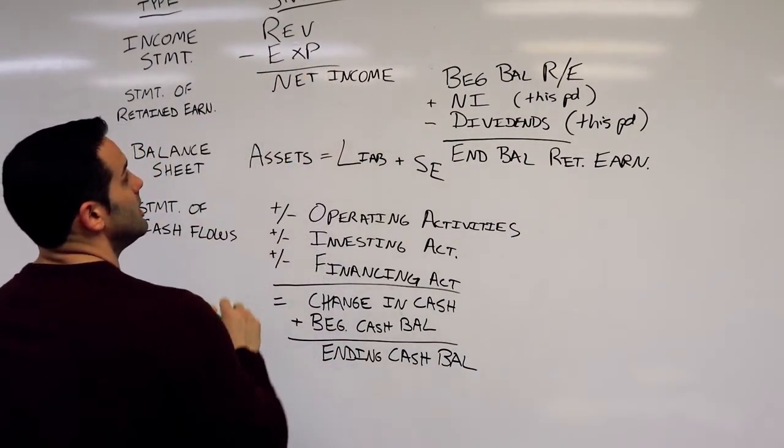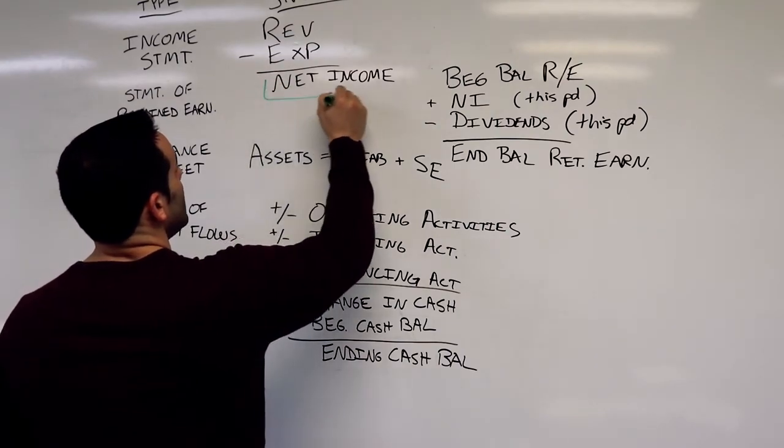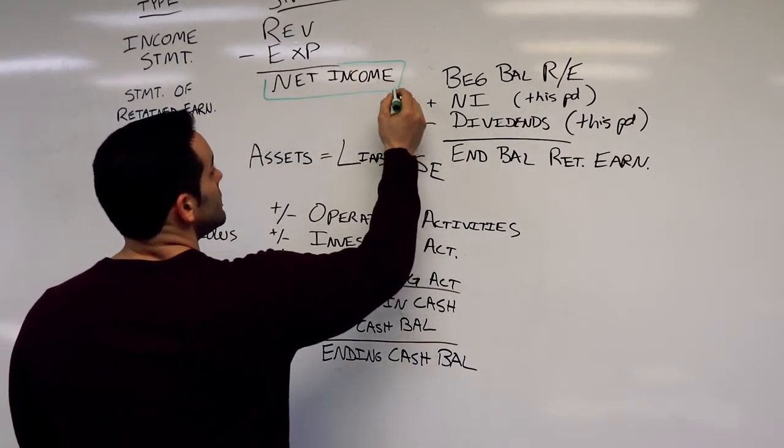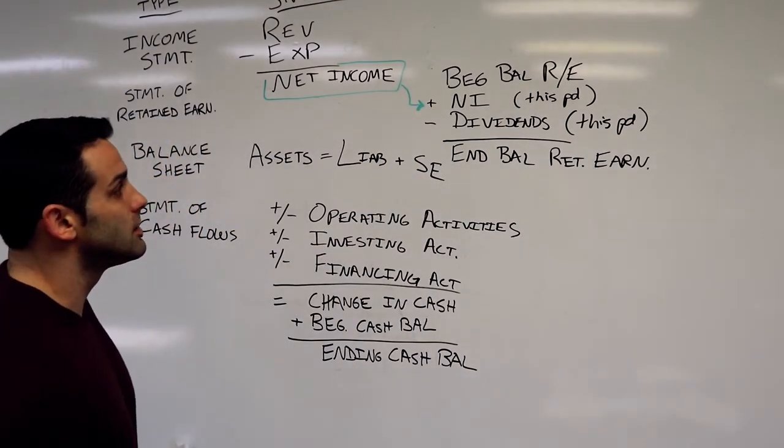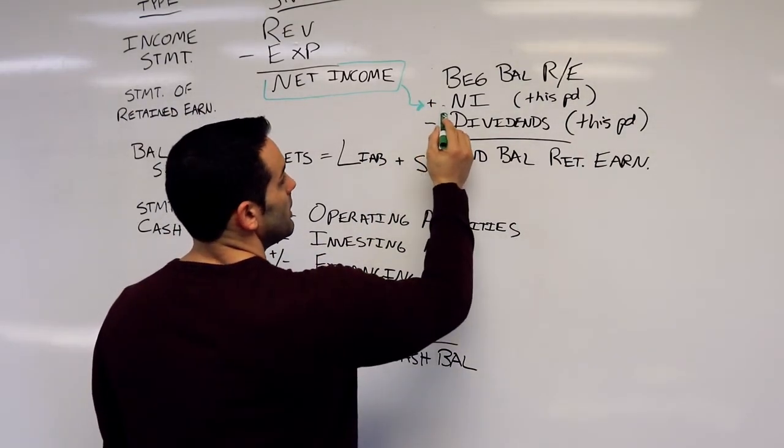Right now, our income statement, revenues minus expenses equals net income. Well, this net income is the same as what's going to be plugged in on our statement of retained earnings, right here, our net income from this period.